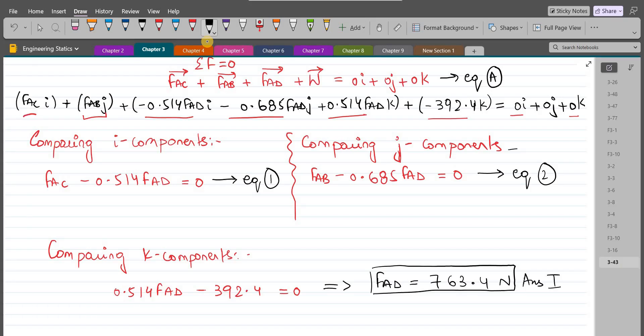Now we can substitute the values of FAD into equation 2 and into equation 1 to find the forces FAB and FAC respectively. So from equation 1, FAC comes out to be 0.514 into FAD which is 763.4 Newtons. So upon simplification, FAC comes out to be 392.4 Newtons. So this is our second answer.